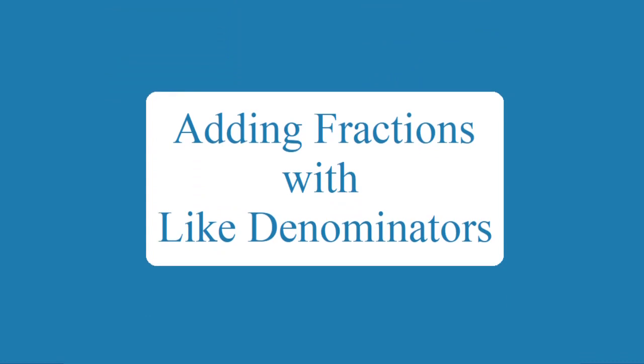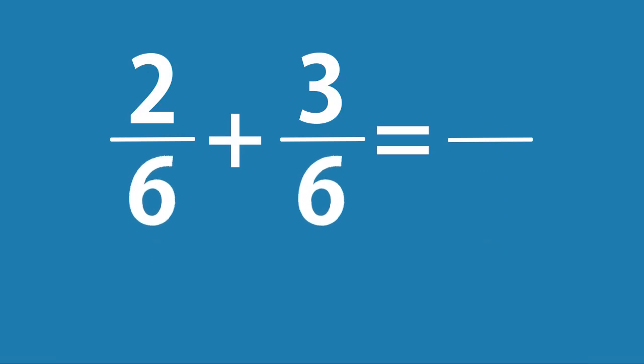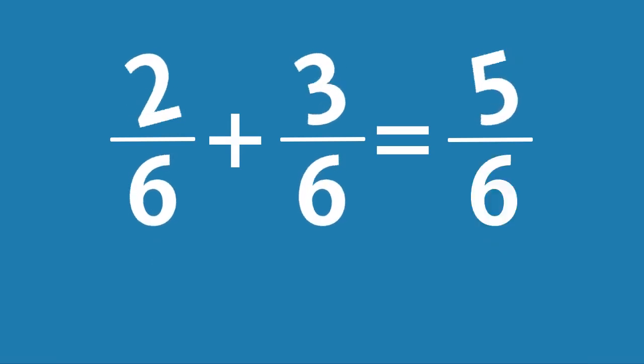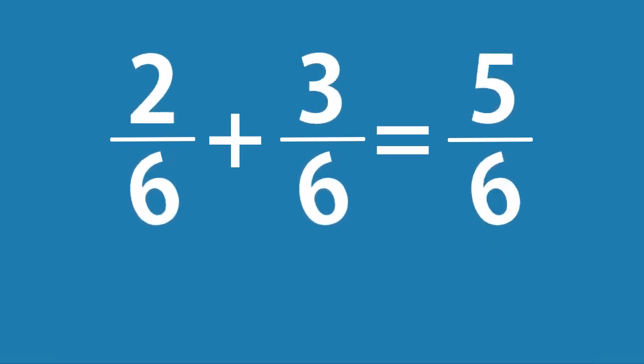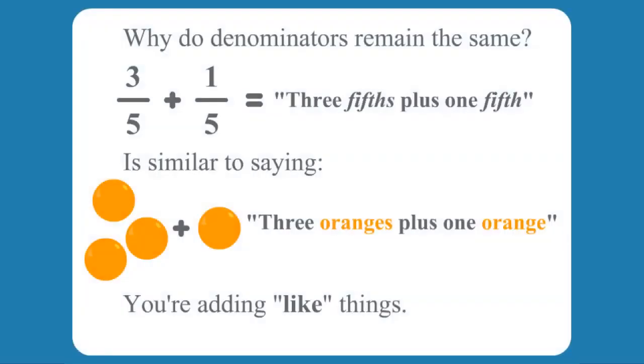Adding fractions with like denominators. When adding fractions with the same denominator, you only add the numerator. The denominator remains the same. Why do denominators remain the same? 3 fifths plus 1 fifth is similar to saying 3 oranges plus 1 orange. You are adding like things.